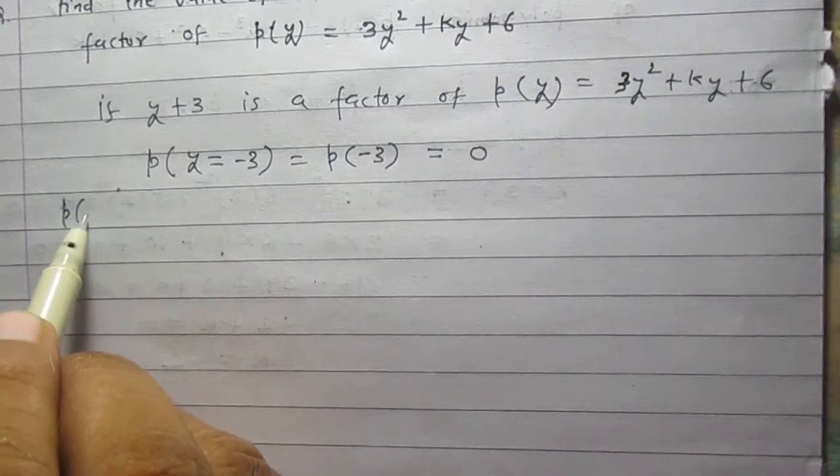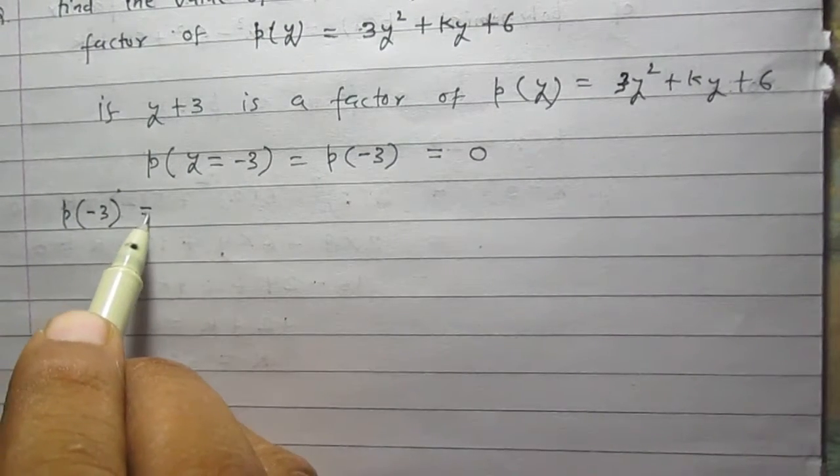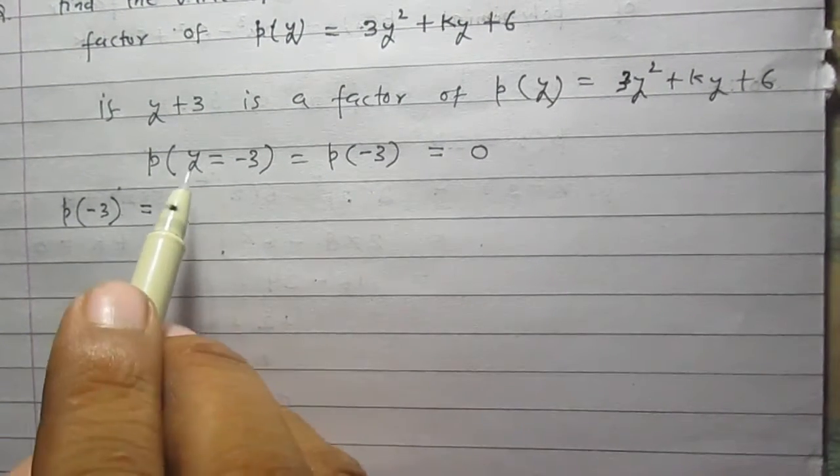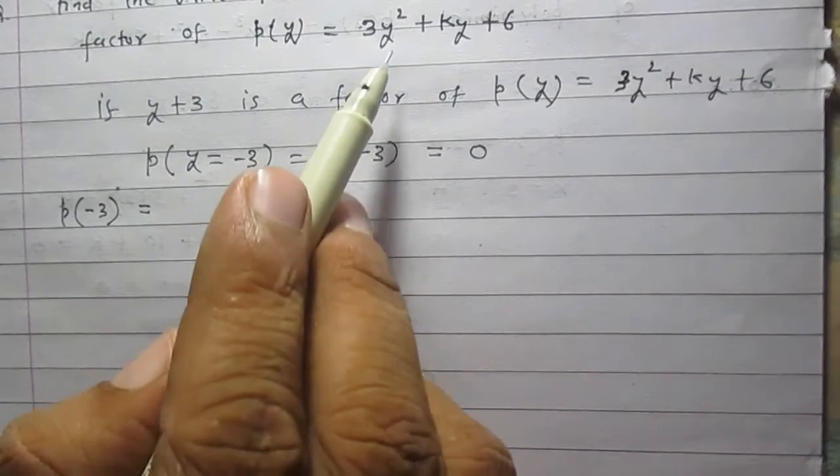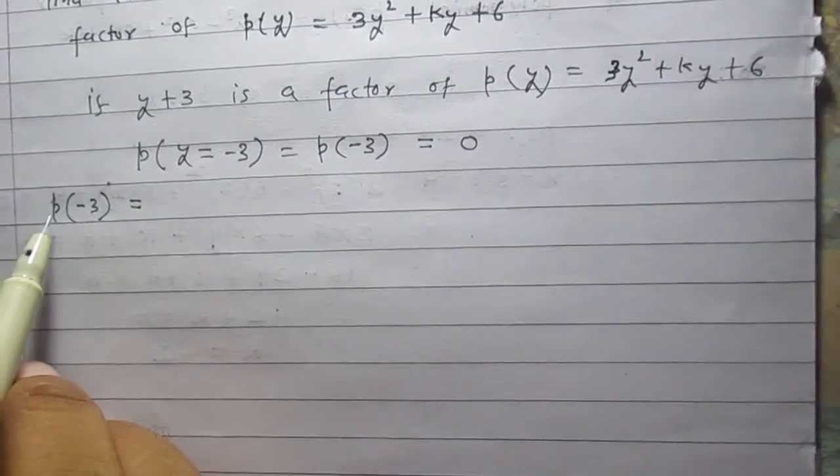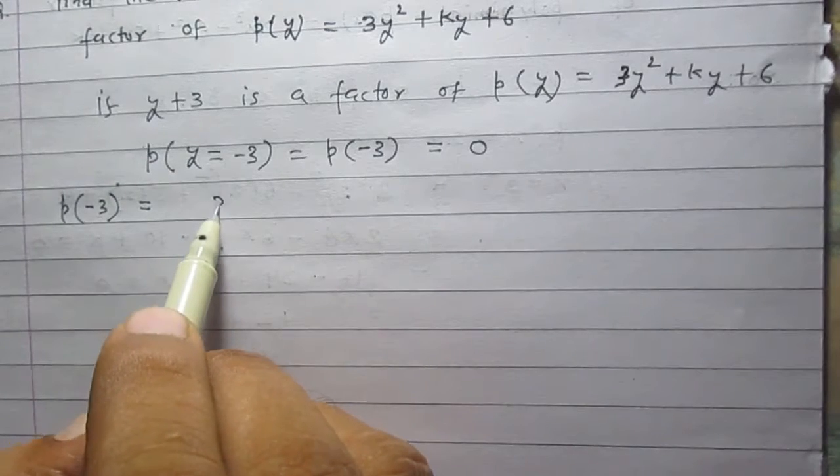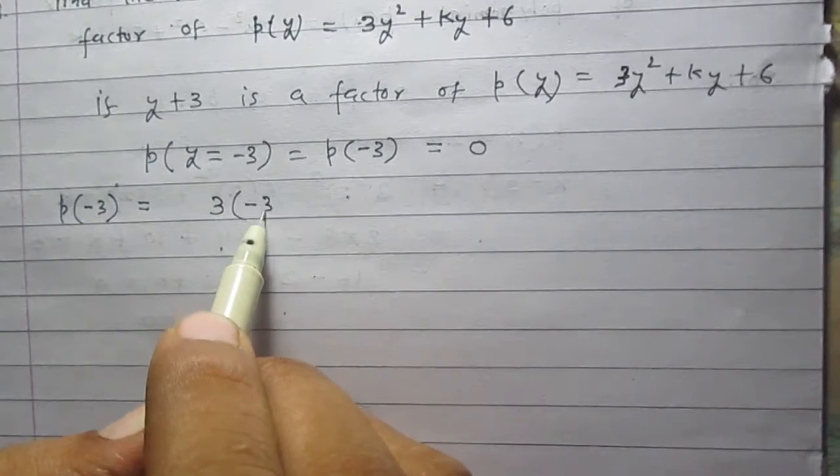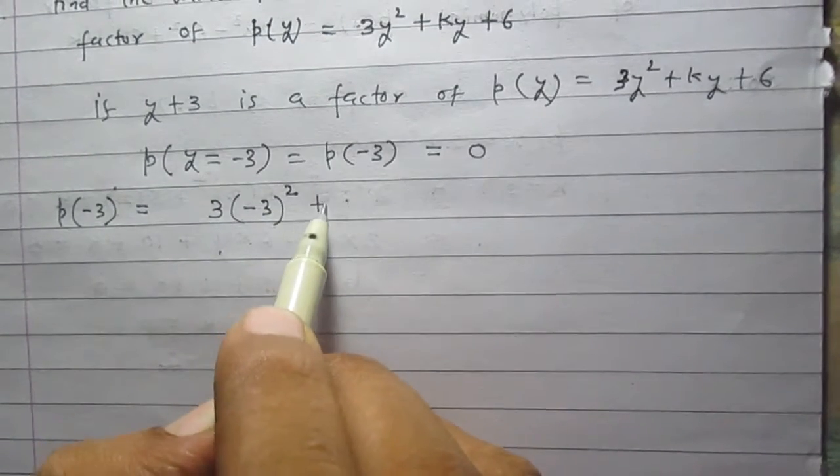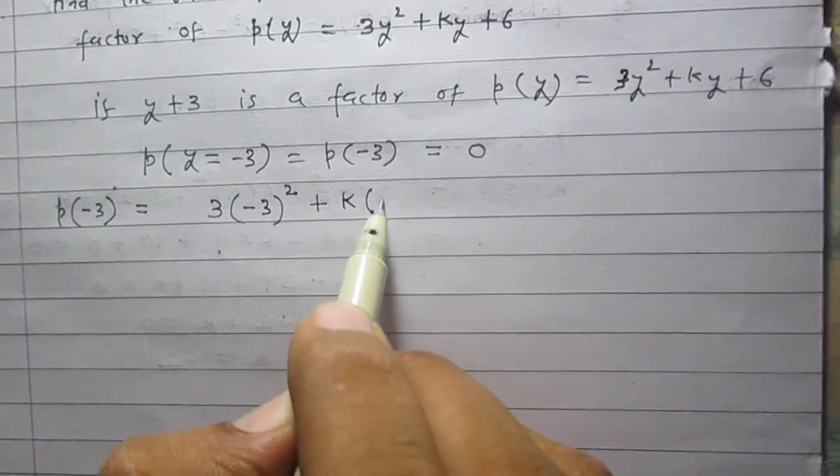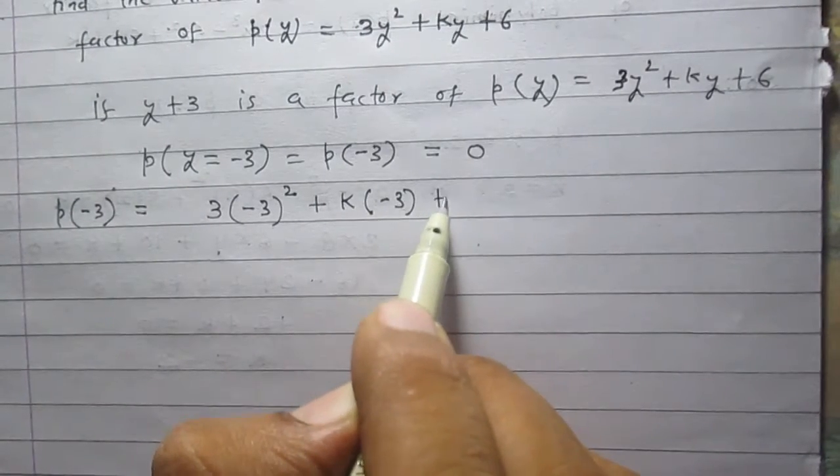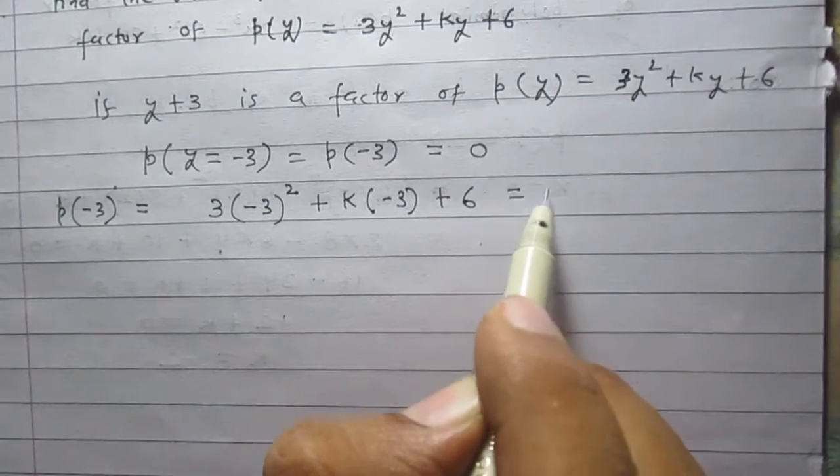We can find the value p of minus 3 by substituting the value of y equals minus 3 in this relation. So we will get p of minus 3 is equal to 3 times the square of minus 3, then k multiplied by y which is minus 3, then plus 6, and it is equal to 0.